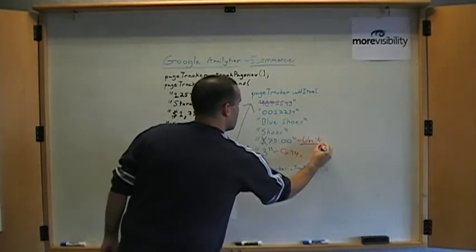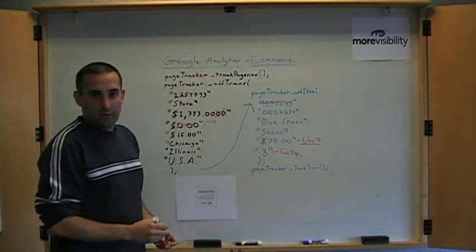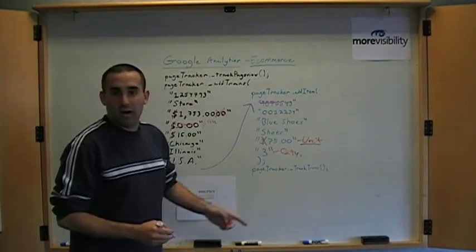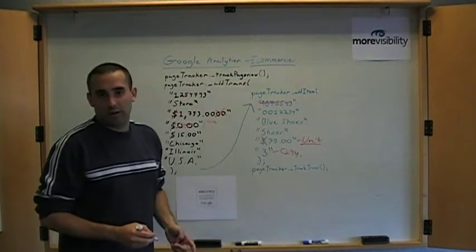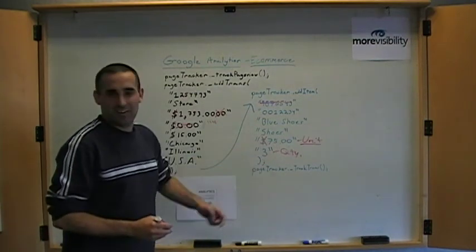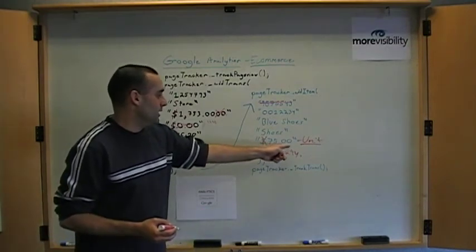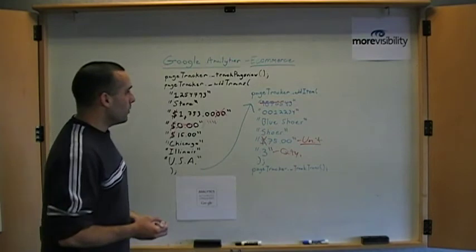Unit price is the important part. So if your item does cost $75, make sure that it's $75 there, not $225, because Google Analytics will do the math for you. So quantity here in this field, whatever that quantity happens to be, and then the unit price here in this field.